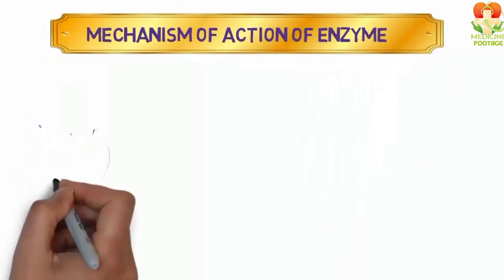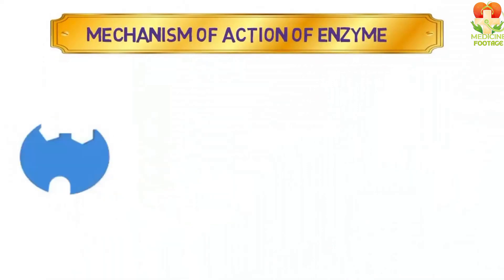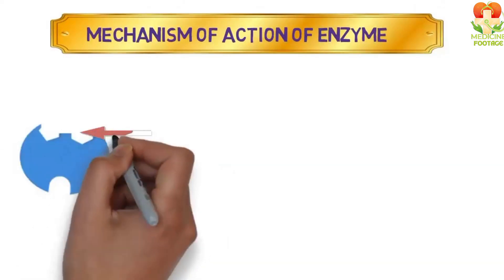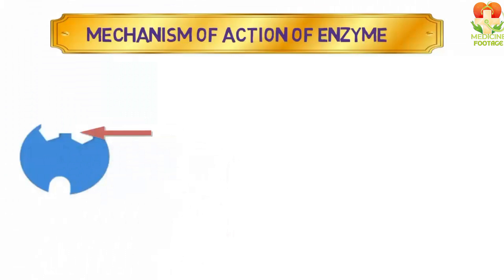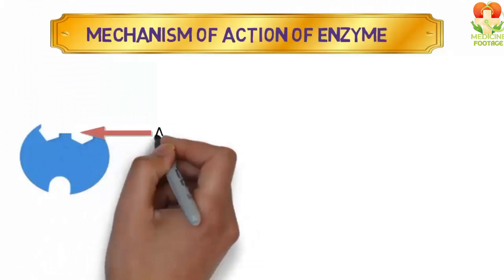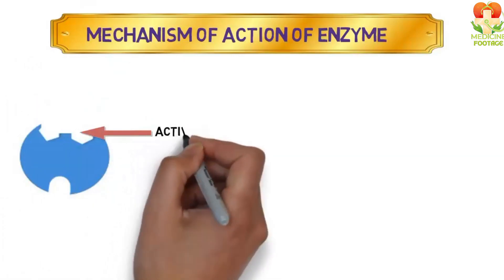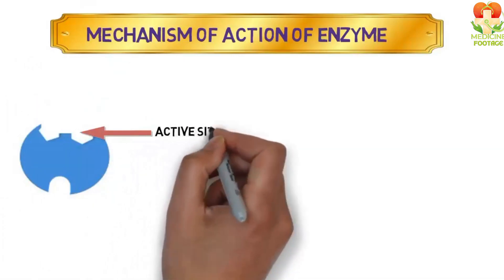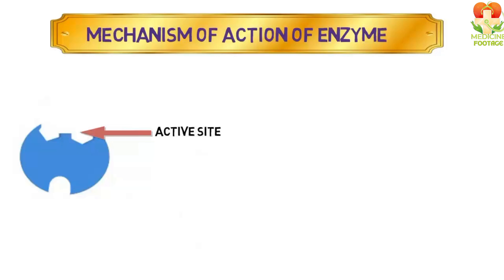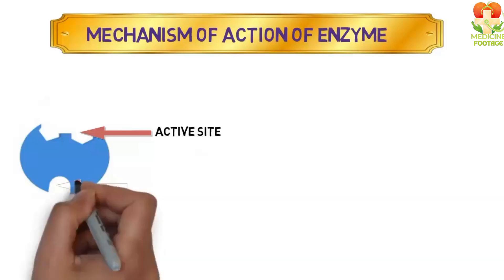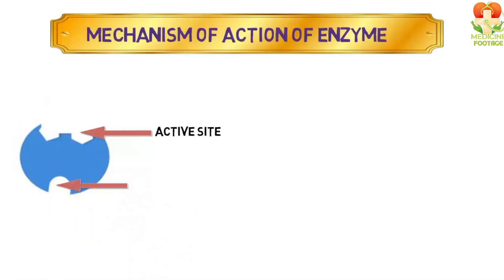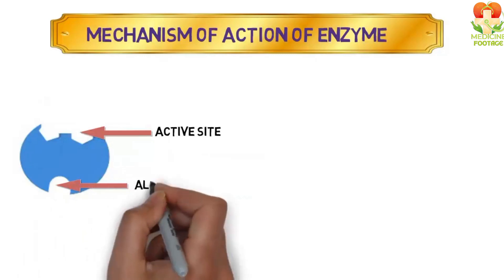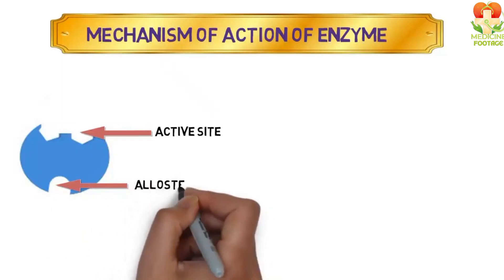As you can see here, this is an enzyme and this part is the active site of the enzyme. The site you see below, opposite to it, is the allosteric site of the enzyme.